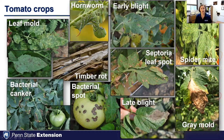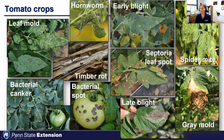Timber rot is caused by Sclerotinia, which has a really wide host range and survives in the soil for an extended period, making accurate identification important for future management strategies. This year we saw a lot of issues with spider mites in high tunnels due to higher temperatures and less rainfall. Now this time of year we're seeing things like gray mold, especially in high tunnels with higher relative humidities.